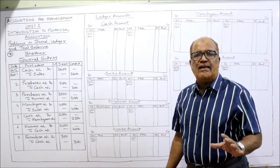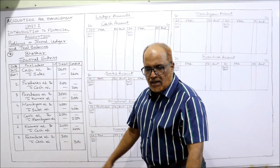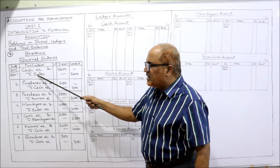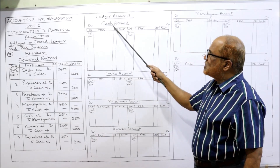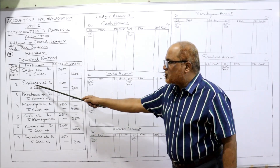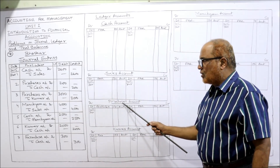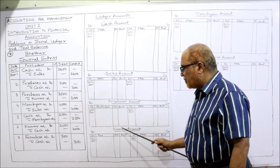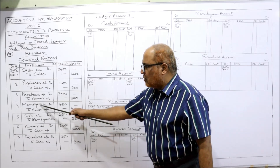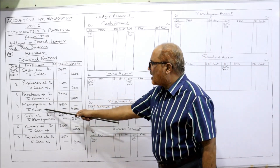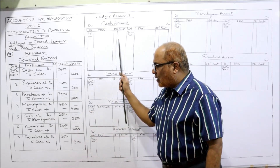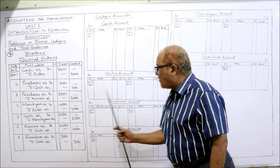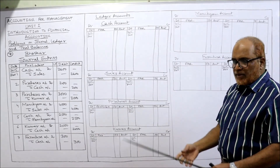Now we have to post them into ledger accounts. We need to open all the accounts: cash account, sales account, purchases account, Kumar account, Moneycam account, and furniture account. I have prepared all these ledger accounts — cash account, sales account, purchases account, Kumar account, Moneycam account, and furniture account.